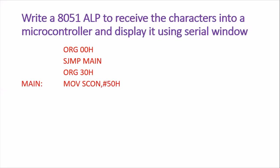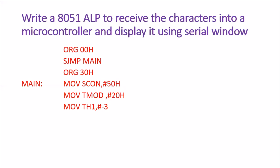The main program starts here. SCON is loaded with 50H to configure mode 1 serial communication and enable it. TMOD is loaded with 20H to configure Timer 1 in mode 2 operation. TH1 is loaded with -3 to generate a baud rate of 9600. Timer 1 is started by setting the TR1 bit in the TCON register to 1, which begins generating the baud rate.